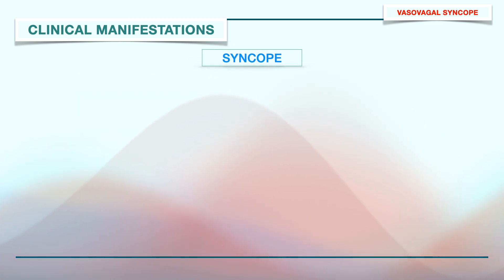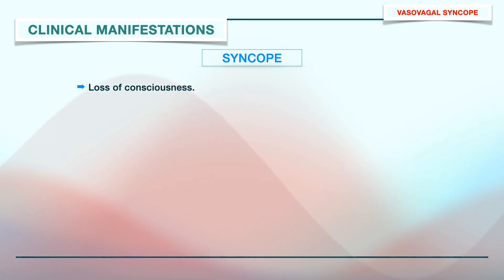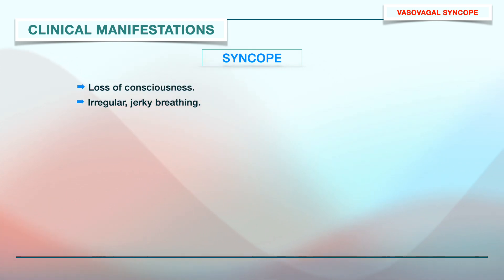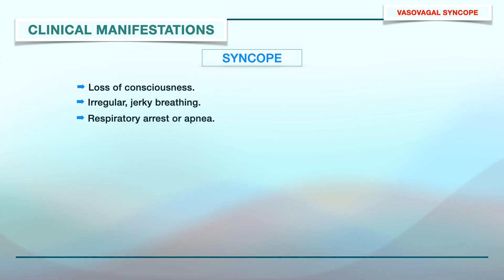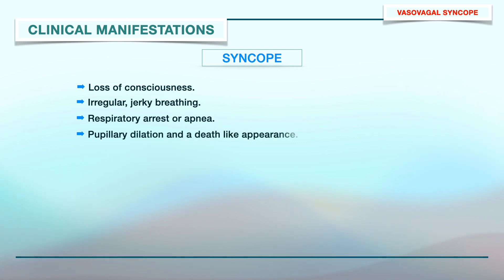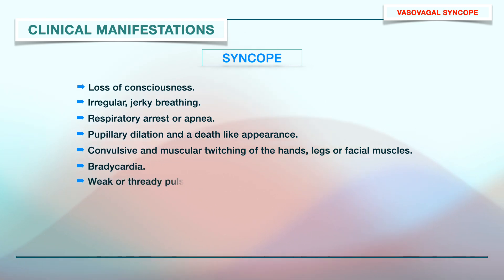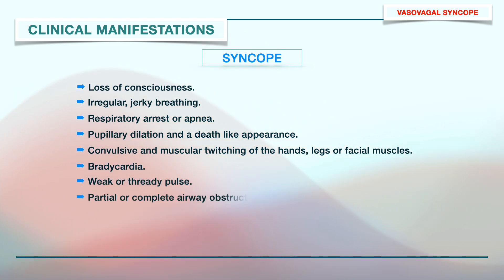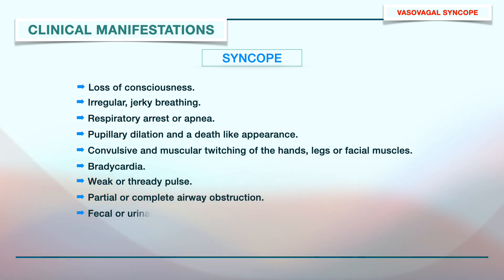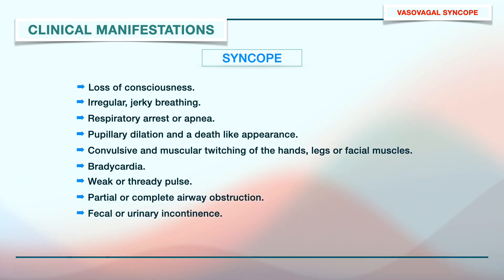During syncope, there is loss of consciousness, irregular jerky breathing that is quite shallow and rarely perceptible, respiratory arrest or apnea, pupillary dilation and a death-like appearance, convulsive and muscular twitching of the hands, legs or facial muscles, bradycardia, weak or thready pulse, partial or complete airway obstruction due to generalized muscle relaxation, and fecal or urinary incontinence, particularly when the systolic blood pressure falls below 70 mmHg.